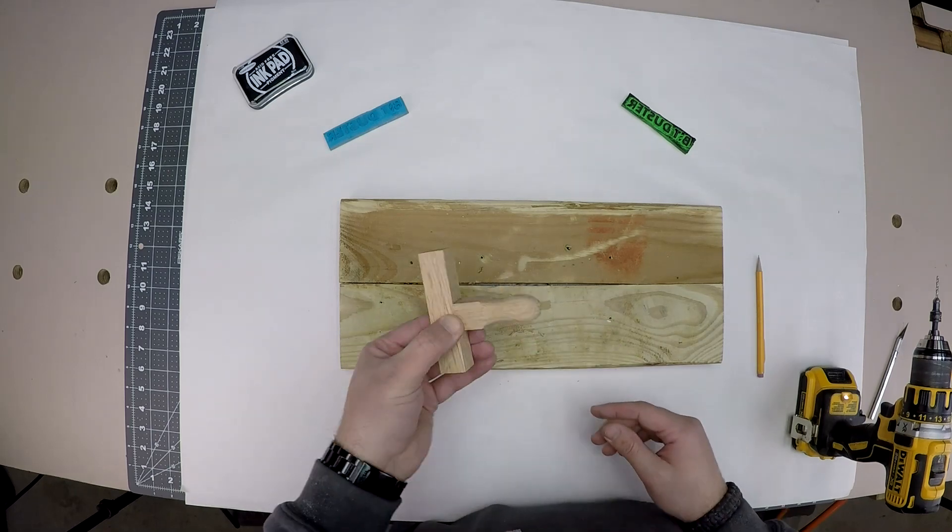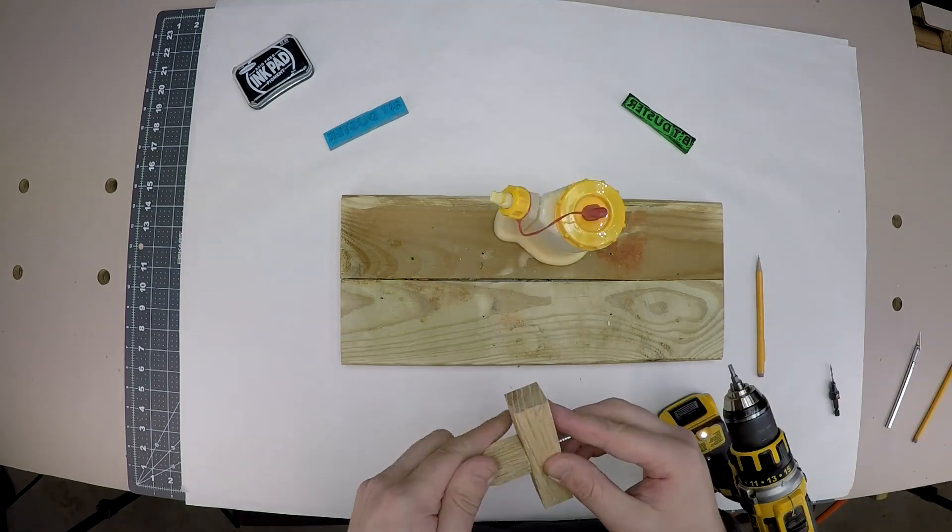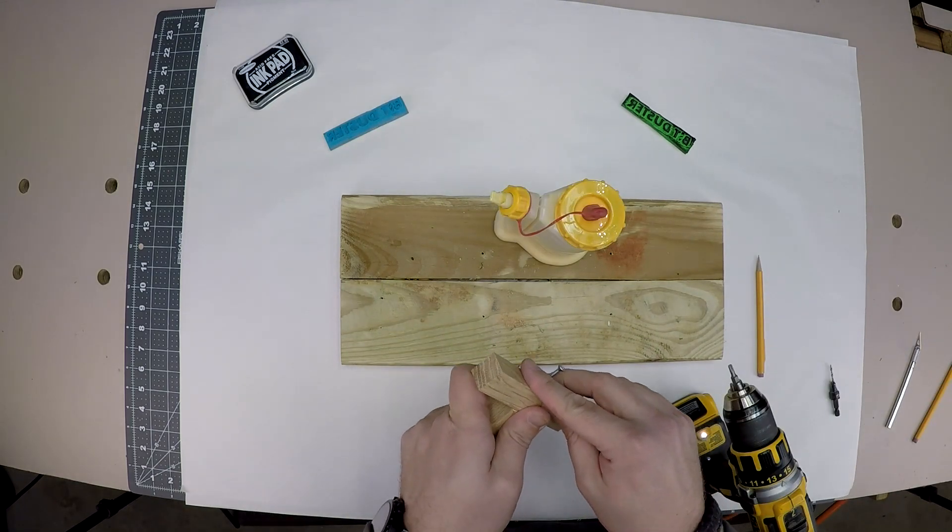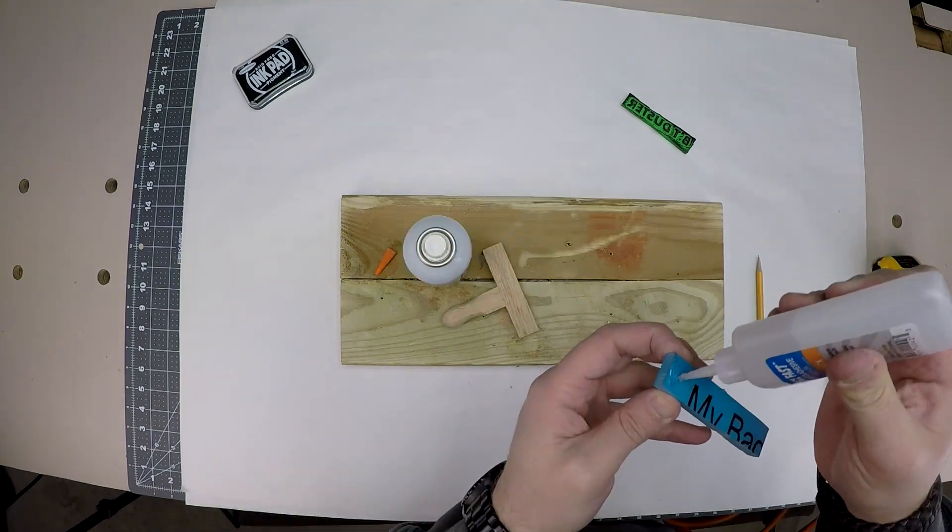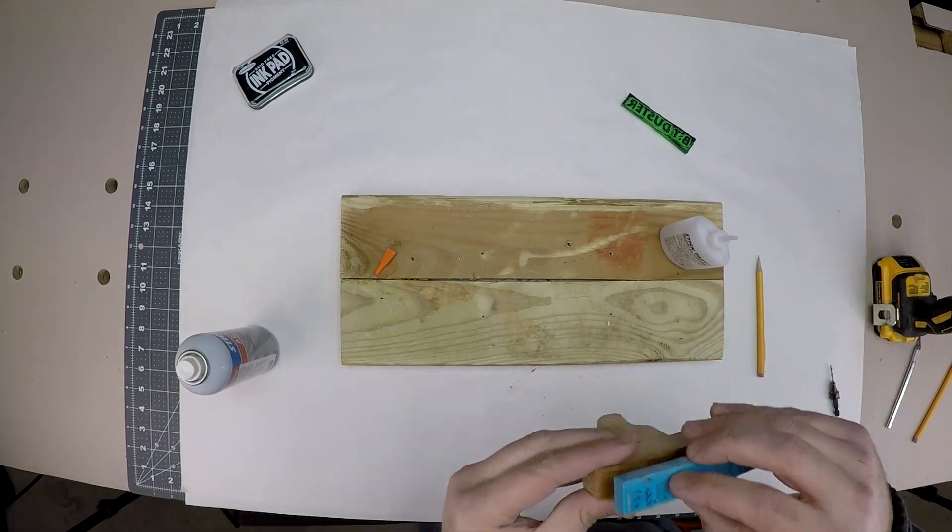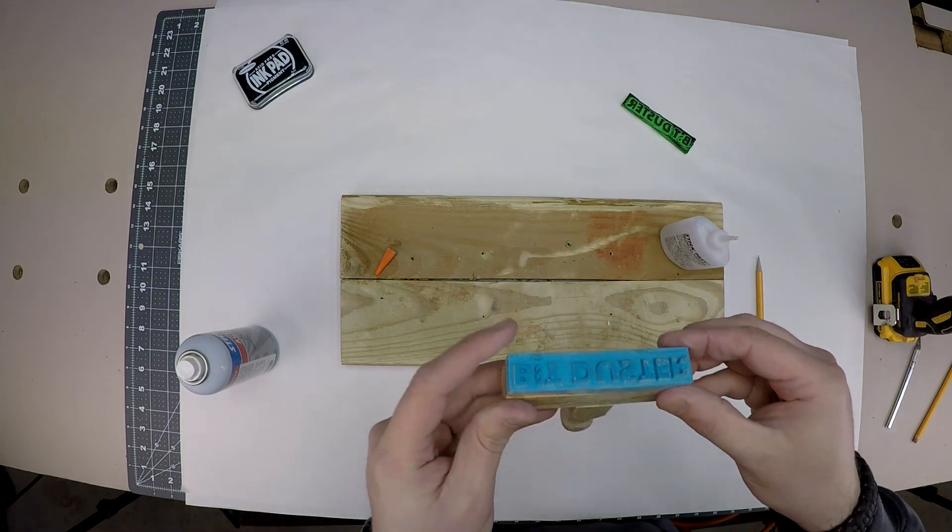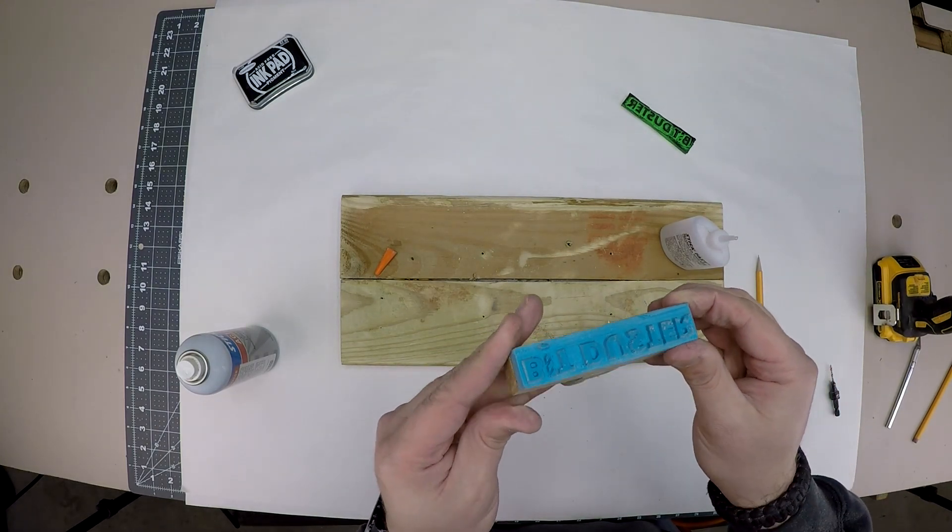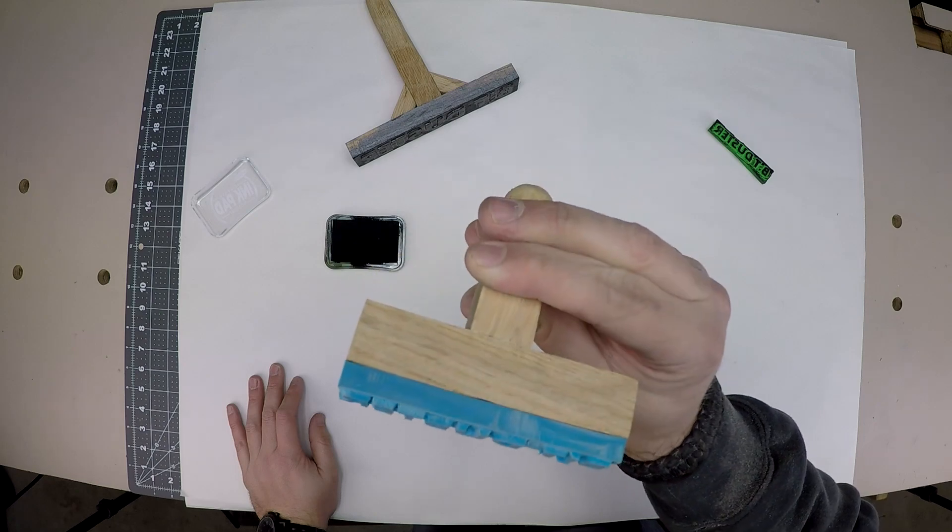Next I make a handle for the stamper by rolling around a piece of wood on the belt sander. I drill a hole in the backer piece and add a screw and some wood glue. Then I use some stick fast glue to attach the eraser to my wood handle. And there we have it. One easy to make custom stamper made from a Dollar Tree eraser.